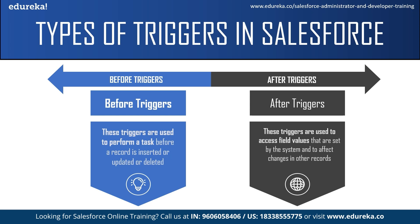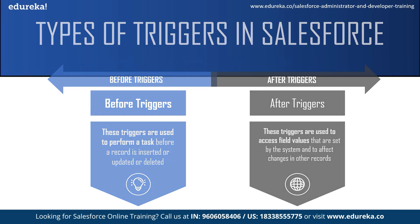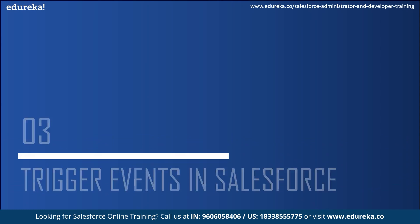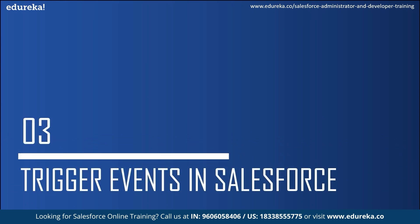After triggers are used to access field values that are already set by the system, such as a record's ID, date, or phone number field, and to affect changes in other records as well. These triggers are usually used to update or validate record values after they are saved to the database. Also, after triggers are read-only — you cannot make any changes to them.